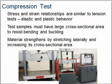We're going to talk quickly about a couple of different tests. The first is the compression test. Stress and strain relationships are similar to tension tests, with elastic and plastic behavior. Test samples must have a large cross-sectional area to resist bending and buckling. Material strengthens by stretching laterally and increasing its cross-sectional area, so if you want something to withstand more compression, give it more cross-sectional area.